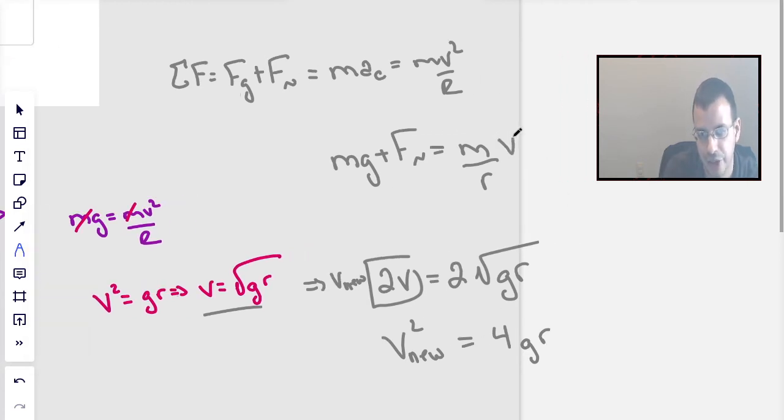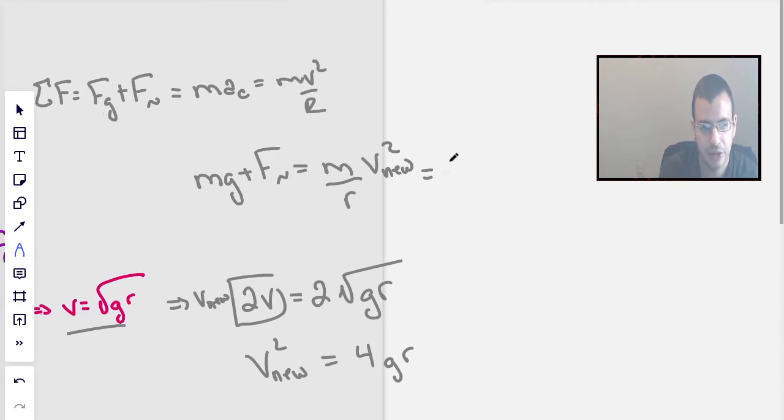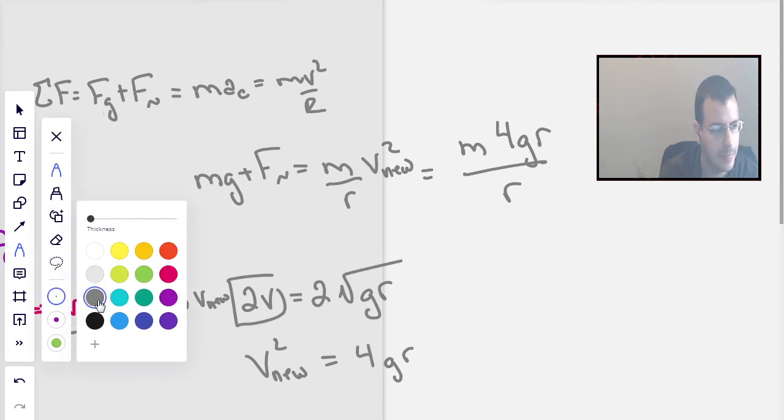This is going to be the v nu-squared, which is going to be 2 times the old v, which is 2 times the square root of gr, square root of get 4gr. I know I could have probably done that in a cleaner, less messy way, but such is life.